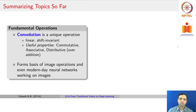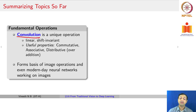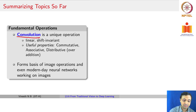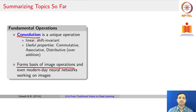One of the things we learned so far is that convolution is a very unique operation. It is linear and shift invariant. It has useful properties such as commutativity, associativity, and it distributes over additions. It forms the basis of image operations and also the basis of neural networks used in computer vision, most commonly known as convolutional neural networks. Convolution still remains in use to this day, even as part of deep learning.